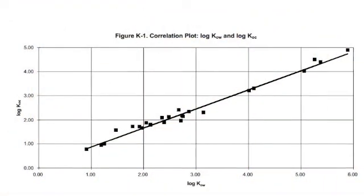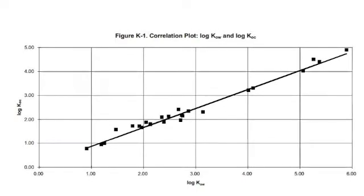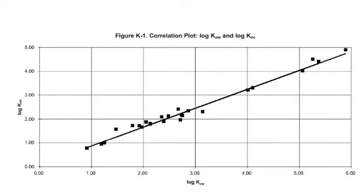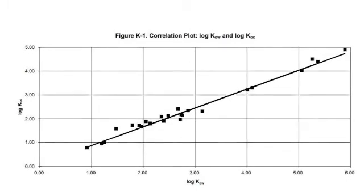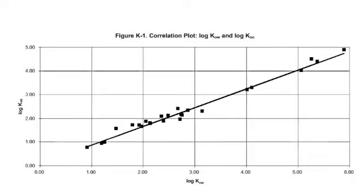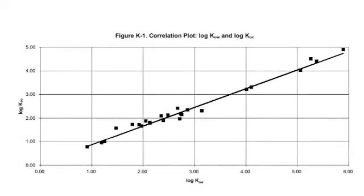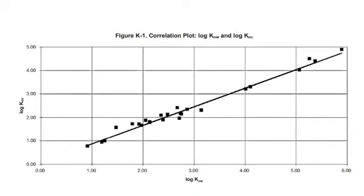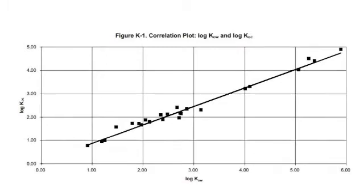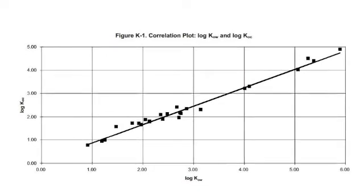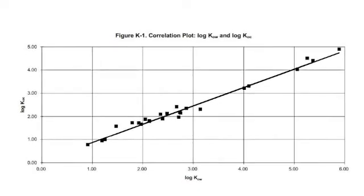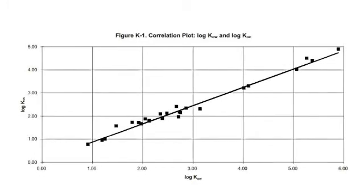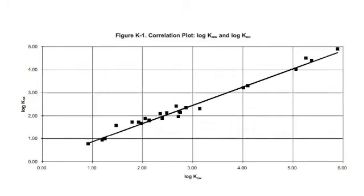In the figure provided by the EPA's website, the correlation between the log of the octanol water partition coefficient, KOW, and the log of the organic carbon partition coefficient, KOC, is shown as a straight line. This is an alternative method to determine the organic carbon partition coefficient if you have previously determined the octanol water partition coefficient.